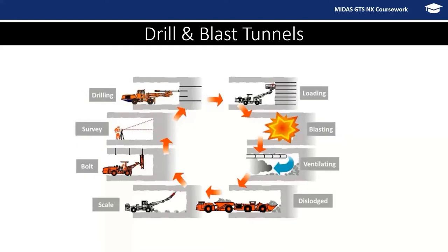Drilling and blasting tunneling is a cyclic process: it starts with drilling, loading drill holes with charges, blasting, ventilation (critical to clear noxious gases), mucking, scaling — which involves dislodging loose overhanging rocks from walls or roof — then applying bolting and shotcrete support, followed by surveying before the cycle repeats.